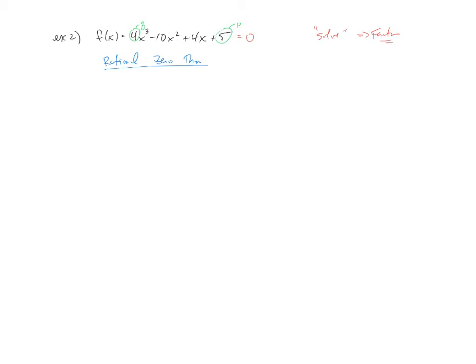So the rational zero theorem says to take p over q, which in our case would be 5 over 4, and list out the factors of 5 and the factors of 4.